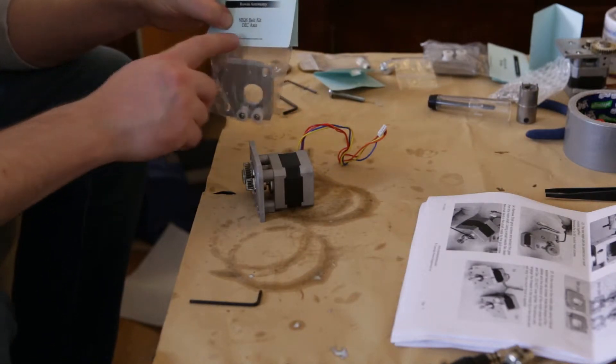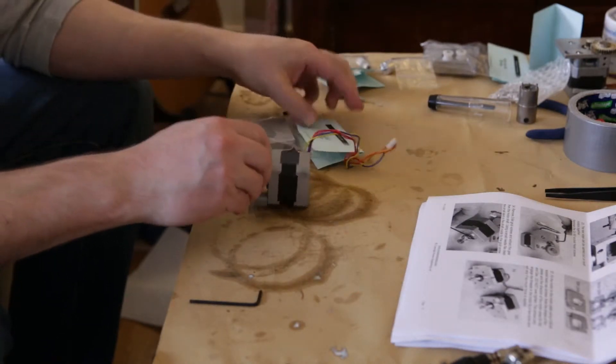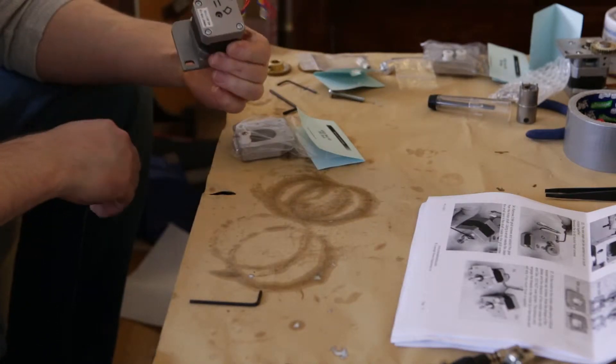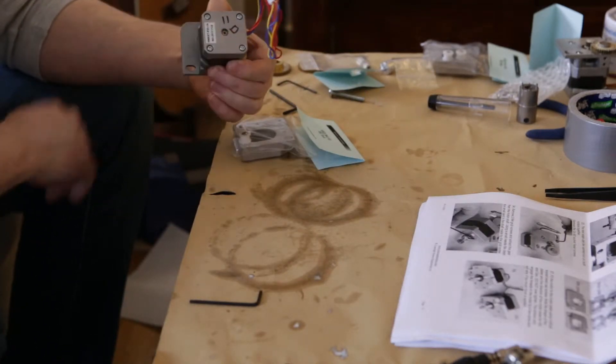It says on the label here that this is for declination axis, and in the beginning before we took the motors out, I marked this one as the declination motor.